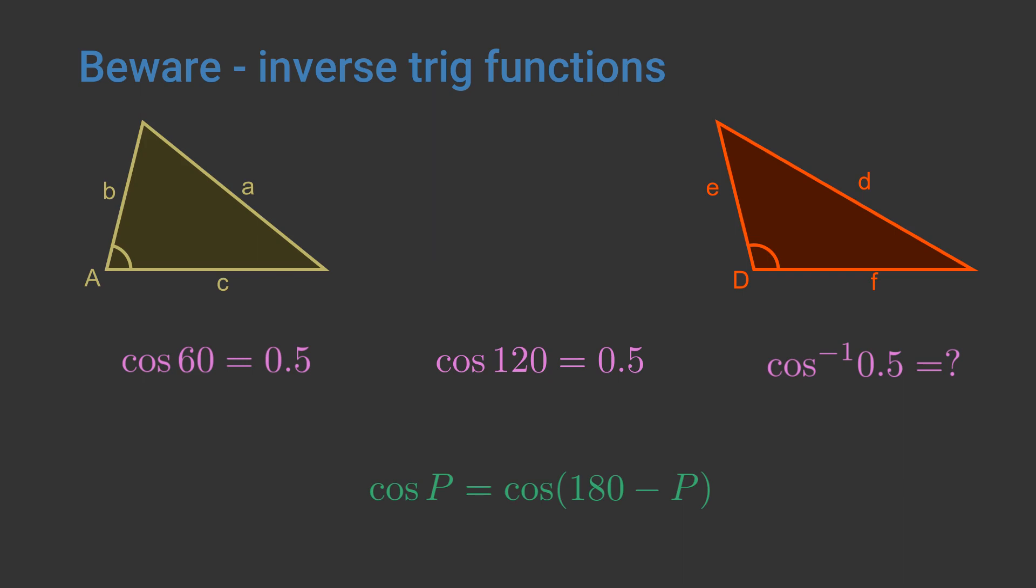So in the two triangles shown here, angles A and D have the same cosine, but they are obviously different because A is acute and D is obtuse. In fact, this isn't too much of a problem for our proof, because the values of the three sides determine whether the angle is acute or obtuse.